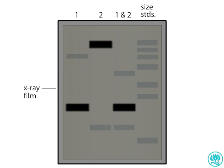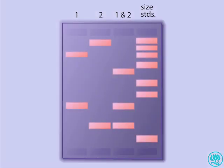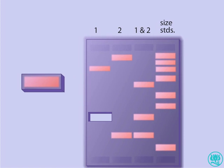Knowing which bands contain the sequence of interest, an identical agarose gel can be created, and a band of interest can be cut out of the gel. The DNA in this band can then be manipulated for further analysis.